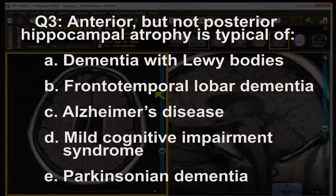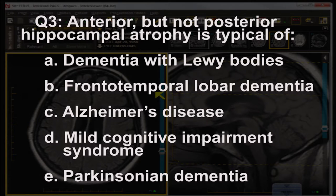Question three: anterior but not posterior hippocampal atrophy is typical of which of the following? A, dementia with Lewy bodies; B, frontotemporal lobar dementia; C, Alzheimer's disease; D, mild cognitive impairment syndrome; or E, Parkinsonian dementia.